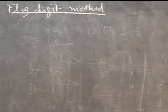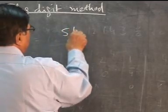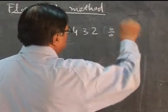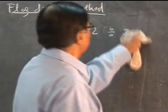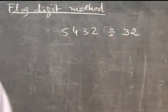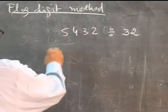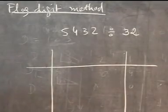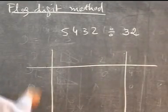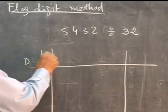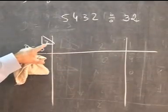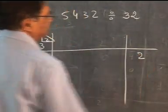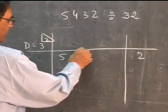Let's take an illustration to understand it. For example, suppose we want to divide 5432 by 34. We can take a smaller number to make it easier to understand. Now, the divisor is 3 and the flag is 2. As many numbers as there are in the flag, that many digits should be separated - so we put 2 here. This part is the remainder part, and then we have 5, 4, and 3.